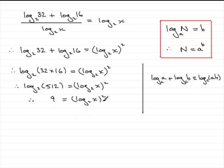Now if I square root both sides, I've got plus or minus 3 - don't forget that - equals log₂(x). Now that means that, according to this rule again, x must be equal to the base, which is 2, raised to the power plus or minus 3.